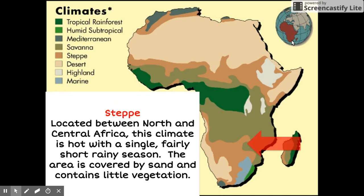The steppe climate is located at the edges of the desert climate between North and Central Africa. It is kind of a cross between the desert and savannah climates. The steppe climate is hot with a single, fairly short, rainy season. The area is covered by sand and contains little vegetation.